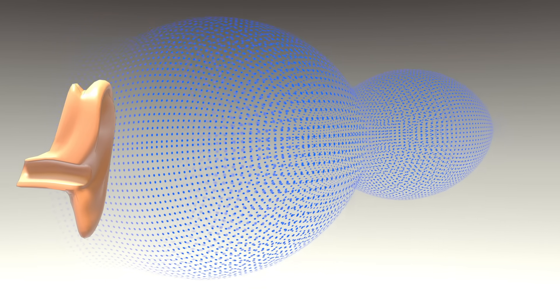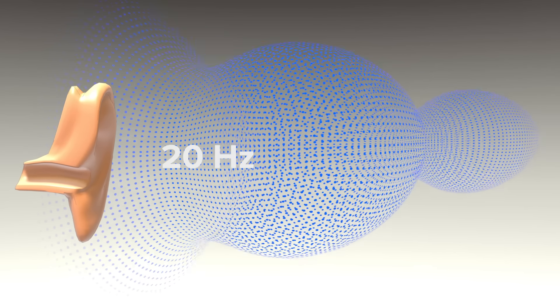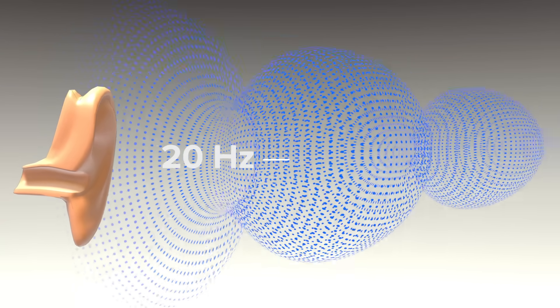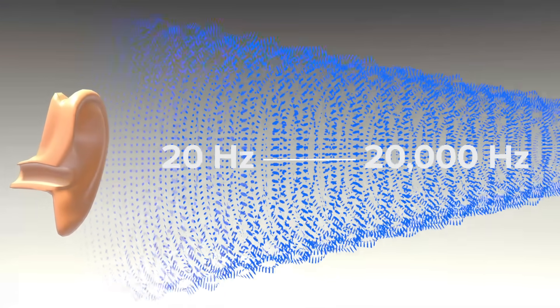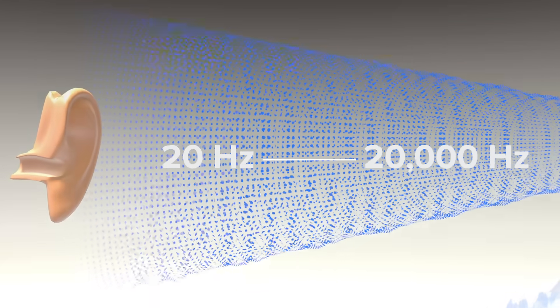The human ear can discern sound vibrations between about 20 Hz and 20,000 Hz. That's a lot of available frequency to work with.